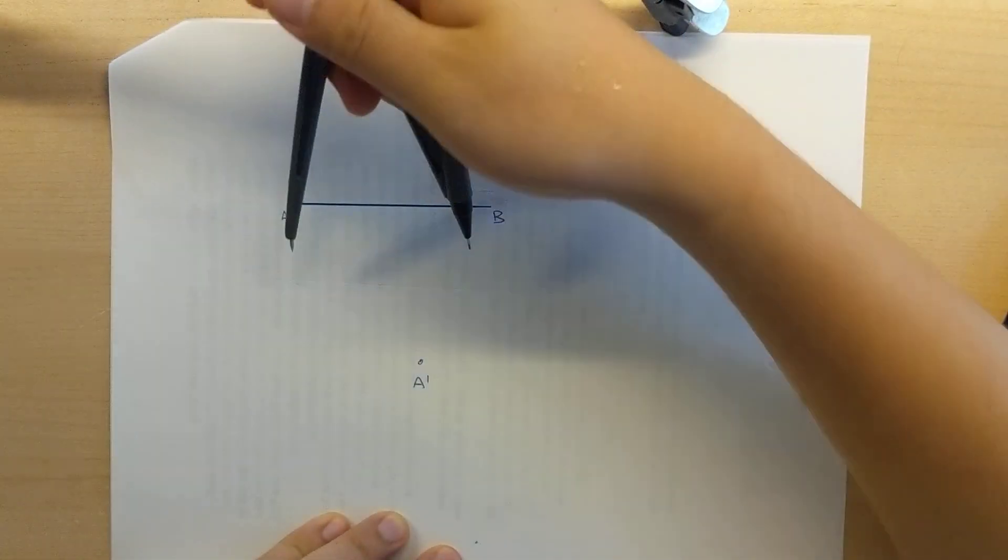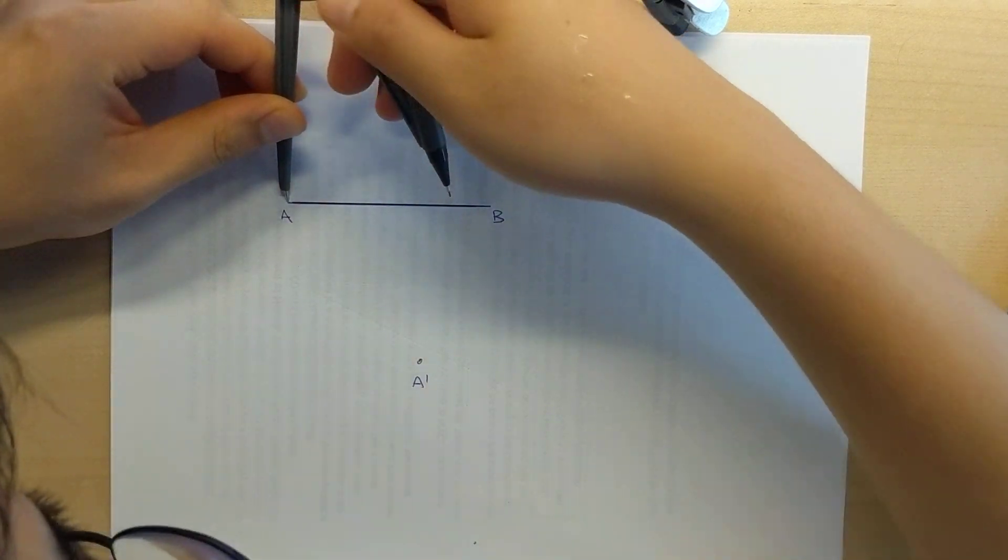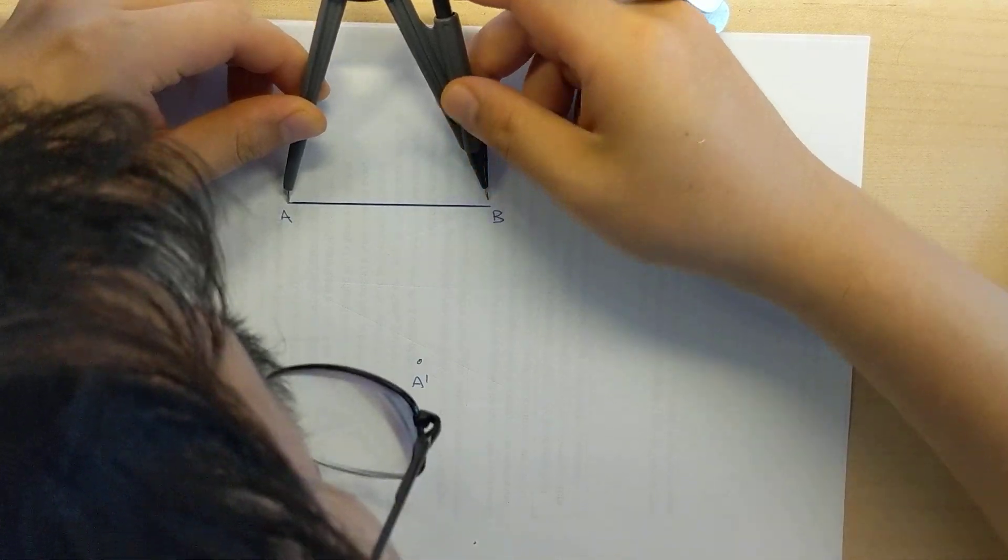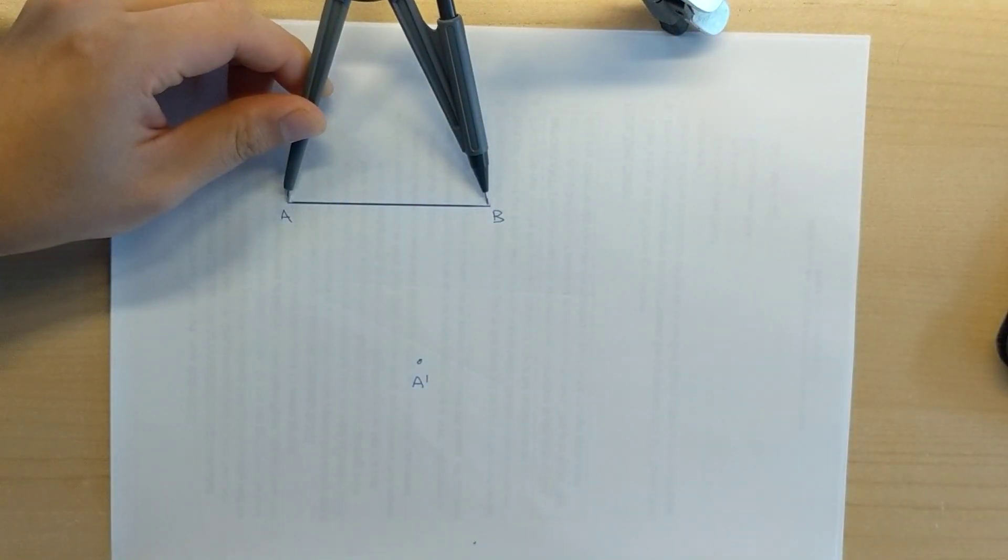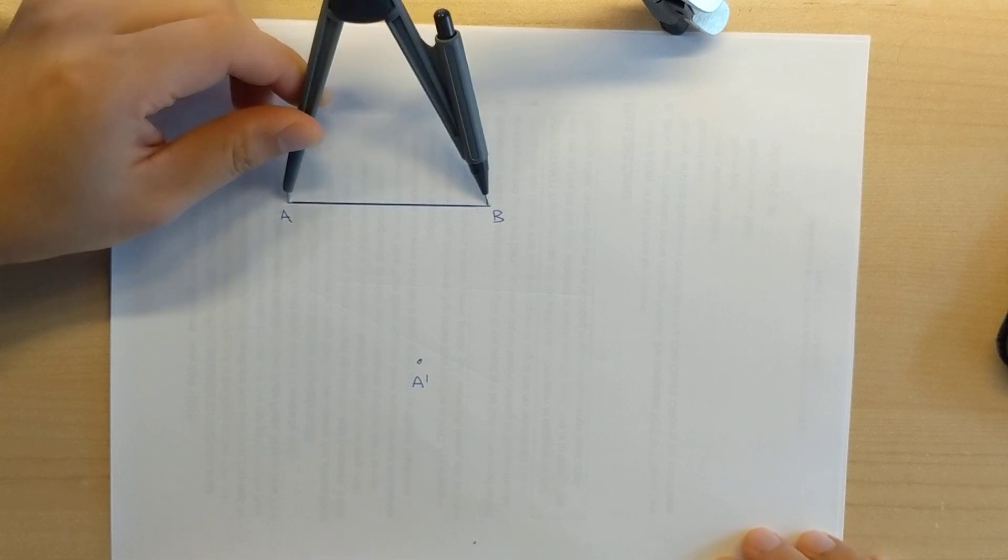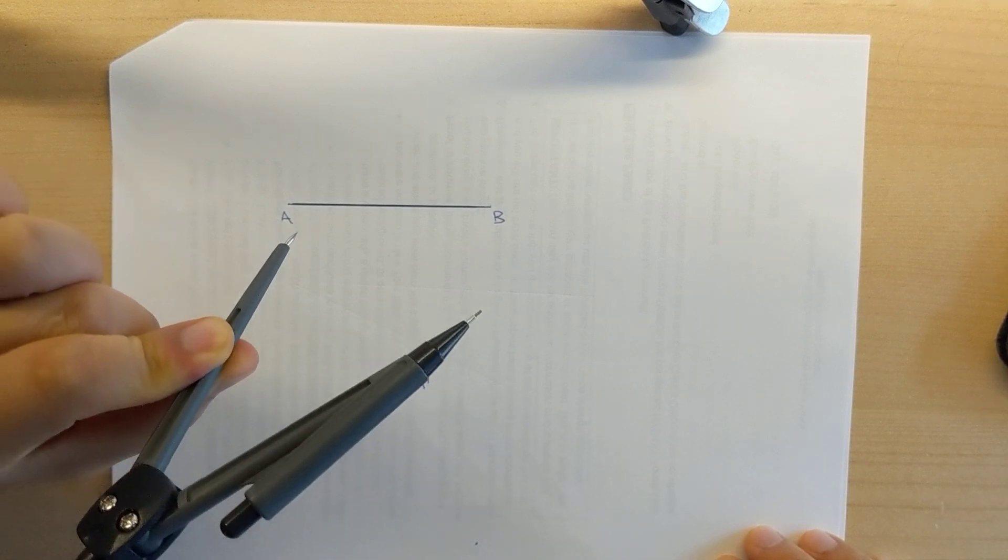And what you do is you're going to place the pin on A. You're going to open up so that the lead goes on B like so. So right now what I've done essentially is I've copied the length of AB onto this compass.